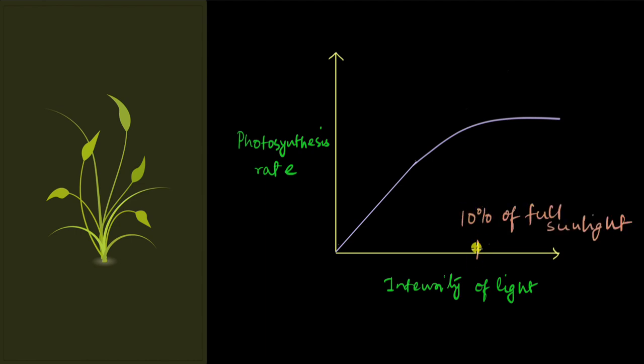But why is this? Intuition would tell us that as you increase the sunlight more, the photosynthesis rate would increase more. But actually, there are other limiting factors like carbon dioxide and temperature.